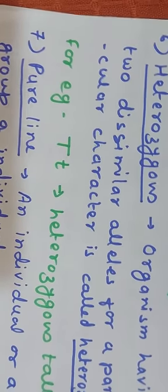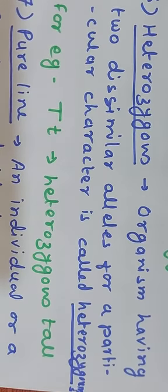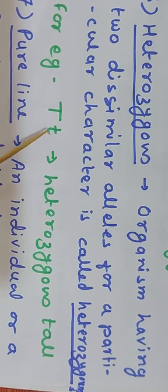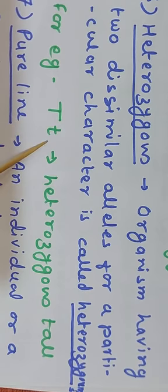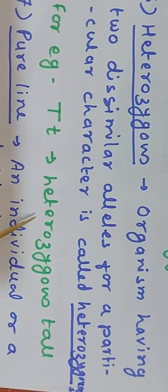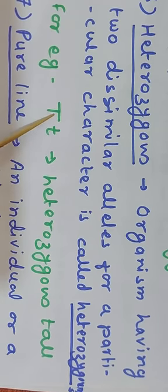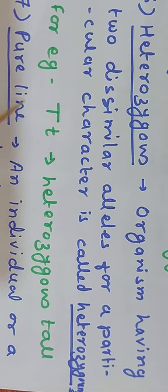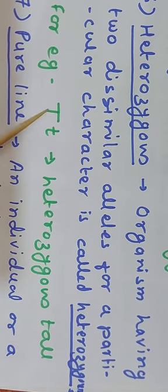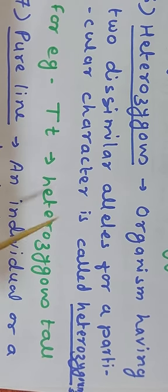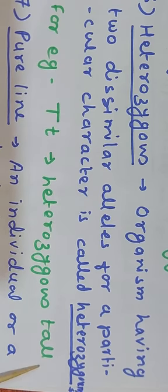Heterozygous: an organism having two dissimilar alleles for a particular character is called heterozygous. For example, a tall-heighted plant with genotype capital T and small t has one dominant and one recessive allele, so that individual is heterozygous for height. If the genotype were capital T capital T, it would be homozygous. So whenever one dominant and one recessive allele are present, the individual is called heterozygous for that character.